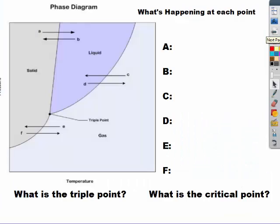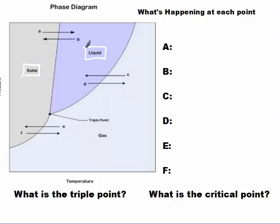The graph on the left is a phase diagram. Some key pieces that you need to recognize. We have solids, liquid, and gas sections. Solid is always lowest temperature, highest pressure. Gases are low pressure, high temperature, and liquids are in the middle.